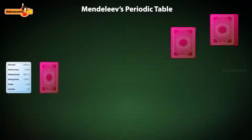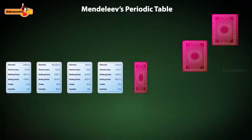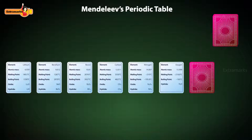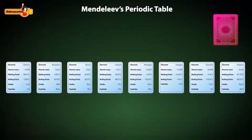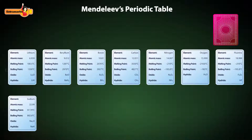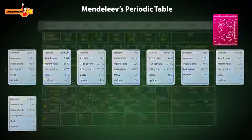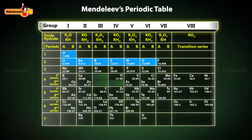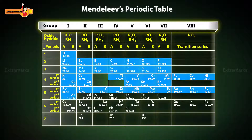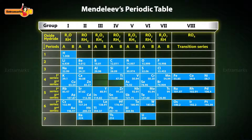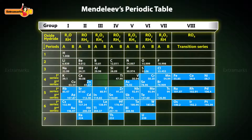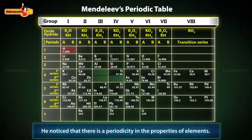Mendeleev arranged the elements in the increasing order of their atomic masses in horizontal rows until he encountered an element having properties similar to the first element. He placed this element below the first element, which started the second row. Proceeding in this manner, he arranged all the known elements in the form of a periodic table, and noticed that there is a periodicity in the properties of elements.